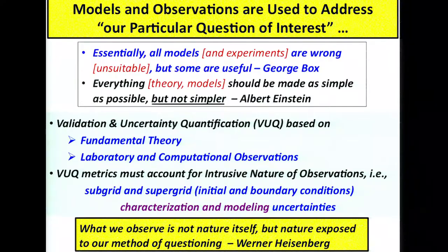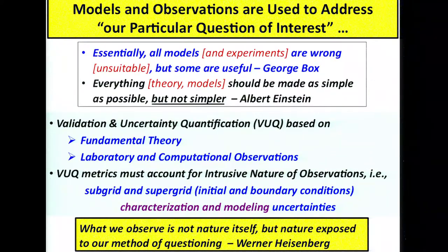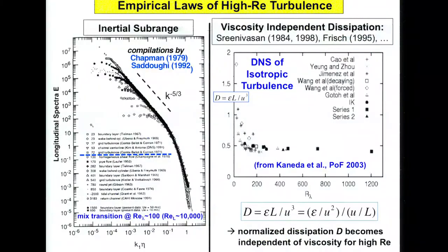The big challenge is that the model is limited by your knowledge and your ability to put that knowledge into mathematical form. Observations are intimately linked to initial and boundary conditions — you can never know enough of them, and even if you do, there's the challenge of how to model them. As Heisenberg noted, what you observe is nature exposed to your method of questioning, and both modeling and observations have inherent limitations.